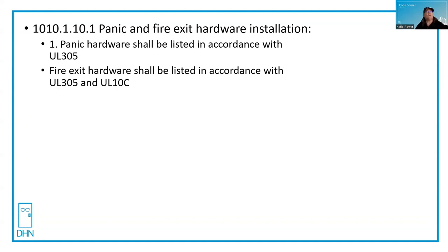In the case of UL 294, you may use panic hardware on that door. If it's mechanical panic hardware and doesn't have anything to do with the release of the mag lock, then the panic hardware would only need to be listed UL 305, and the mag lock and other components like the power supply would be UL 294.